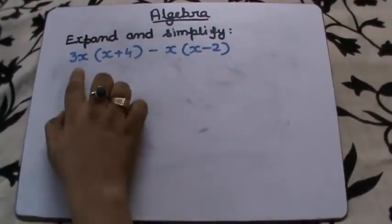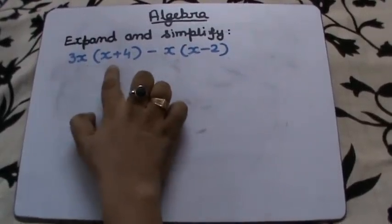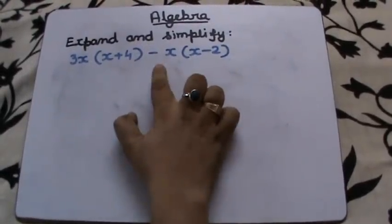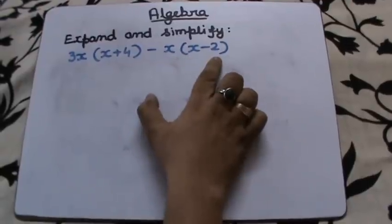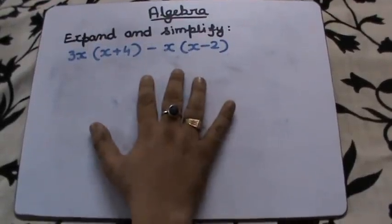This is the question given to us: 3x in brackets (x + 4) minus x (x - 2), and we are supposed to expand and simplify.